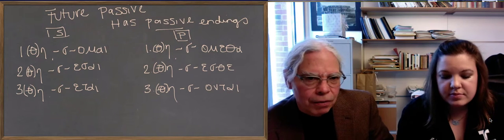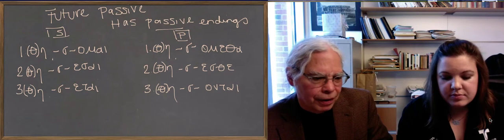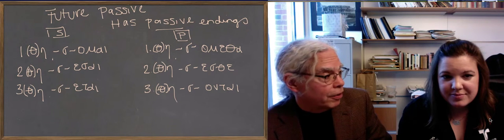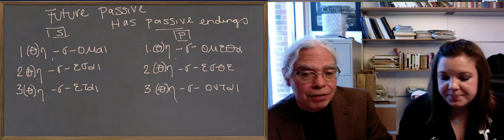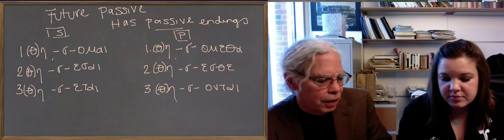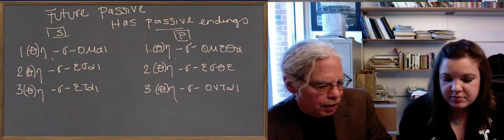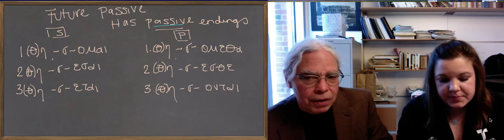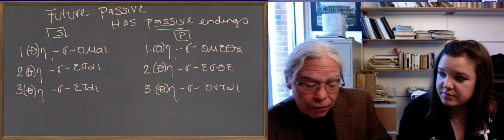Now we're going to lastly look at the future passive to make the story complete. Although the aorist passive has active endings, the future passive does have passive endings, but it too exhibits the theta, the optional theta with an eta as the sign of passiveness. That's the consistent thing.